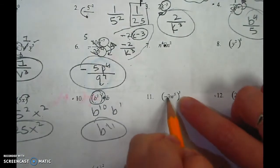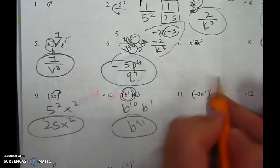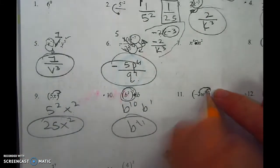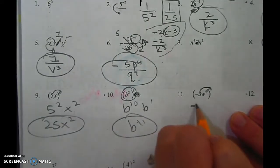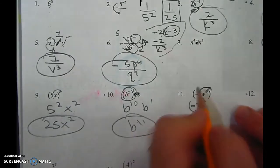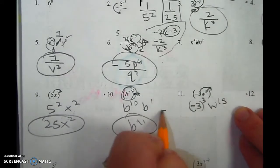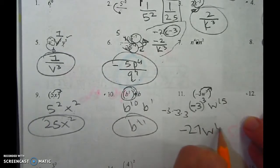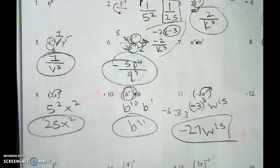This one is just like this one. I give the cube to the negative 3 and I give the cube to the w, but it has a 5 already. So now it's really negative 3 cubed. Whenever I have a negative, I put it in parentheses. And 5 times 3 is 15. Negative 3 cubed is negative 27w to the 15th.